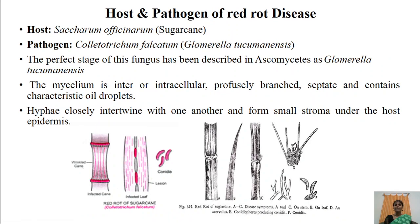Coming to the host and pathogen of red rot disease — the host is Saccharum officinarum, commonly called sugarcane. The pathogen which causes the red rot disease is a fungus called Colletotrichum falcatum, whose perfect stage has been described in Ascomycetes as Glomerella. The mycelium is inter- or intracellular in nature, profusely branched with septate hyphae containing characteristic oil droplets. The hyphae closely intertwine to form a compact structure known as stroma under the host epidermis.